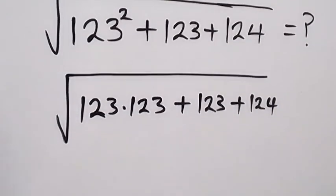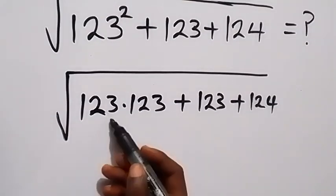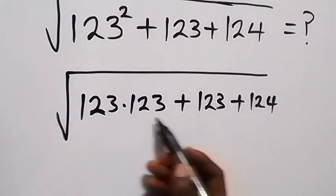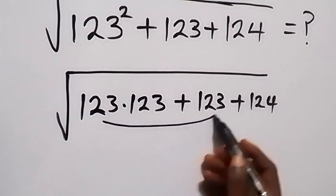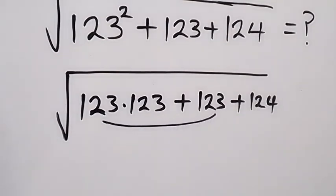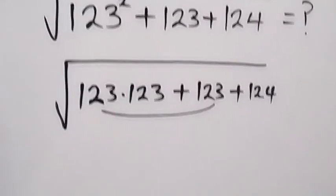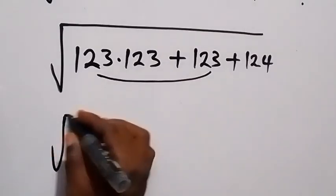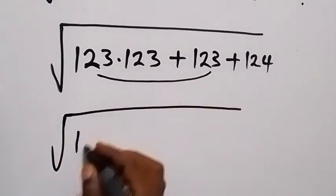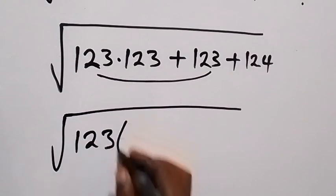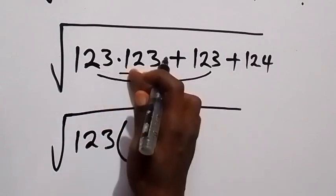And next, we have 123 common here. So from these two terms, we can factor 123 out. Then in the next step, we have square root of 123 into bracket. What is left here? Then we have 123.